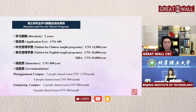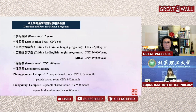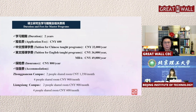For master's programs, the duration is two years. The application fee is the same. Tuition fees are separated between Chinese-taught and English-taught programs. Again, if you study online and cannot come to China, you only need to pay the application fee and tuition fee.